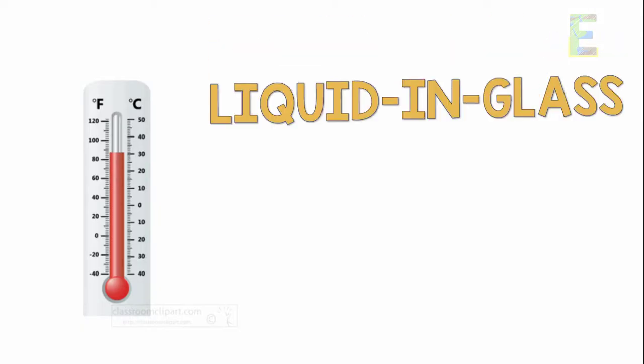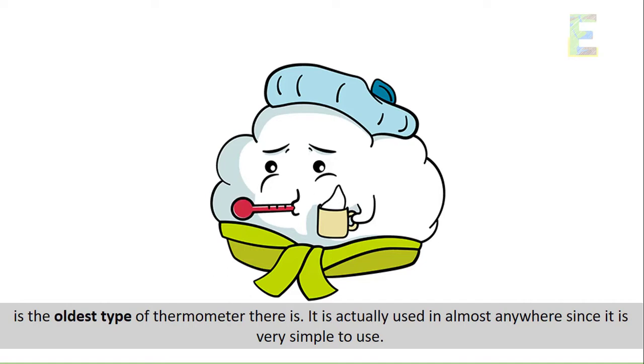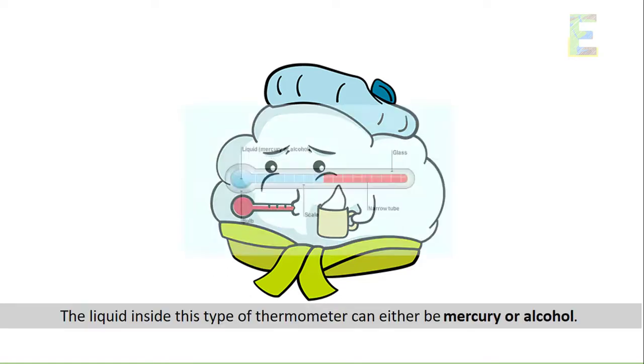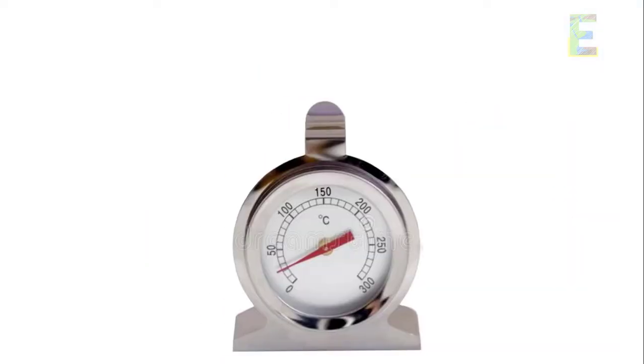Next is the liquid in glass thermometer. It is the oldest type of thermometer. It is actually used in almost anywhere since it is very simple to use. The liquid inside this type of thermometer can either be mercury or alcohol.